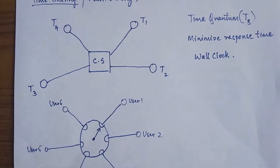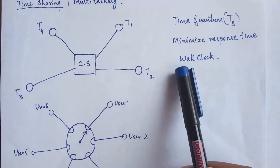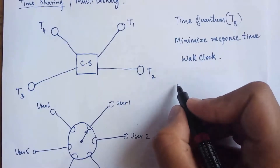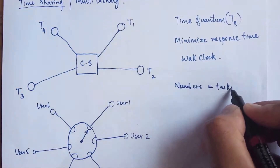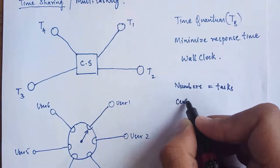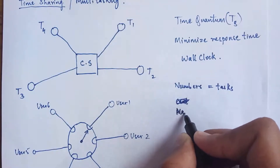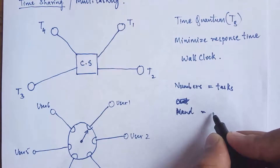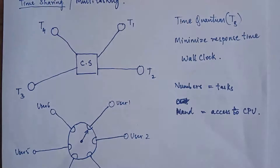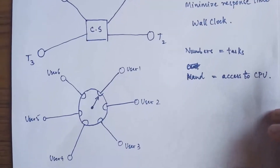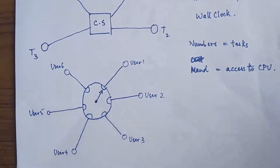To have a clearer understanding, we can compare a timesharing system to a wall clock. The numbers on the clock represent the tasks, and the hand of the clock represents access to the CPU — the hand determines which task gets CPU access. Let's take that example to understand what a timesharing system is.